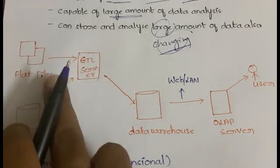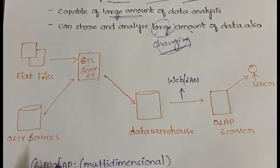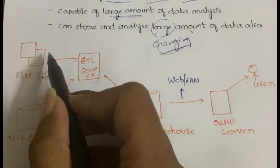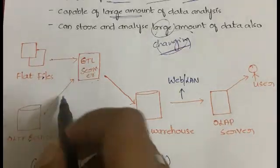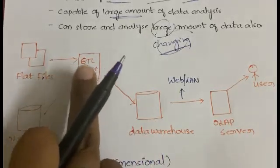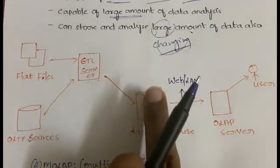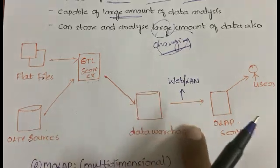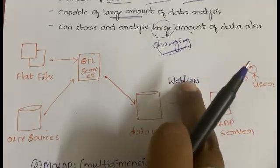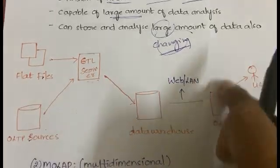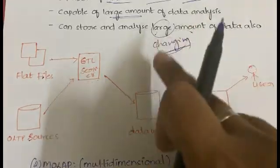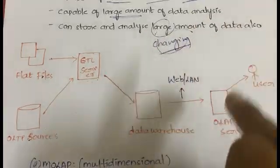So the information coming from flat files and OLTP sources is first loaded into the ETL server, from the ETL server it is sent to the data warehouse, from the data warehouse to the OLAP server via web or LAN, and from the OLAP server the information is passed to the user. That is how ROLAP works.